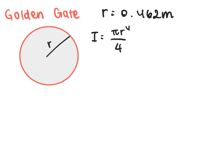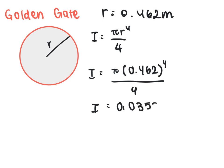And all we have to do is substitute that in. So I'm going to substitute in 0.462 to the fourth all over 4. So I end up getting that my area moment of inertia is 0.0358 meters to the fourth power.